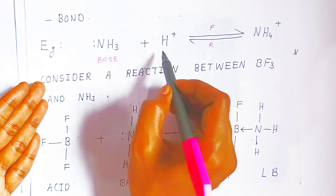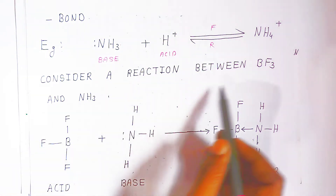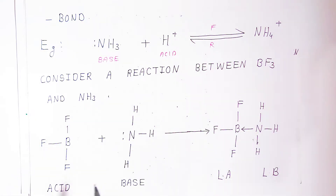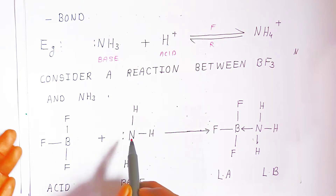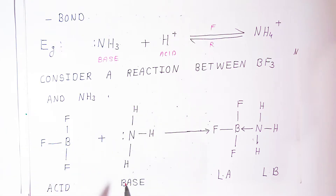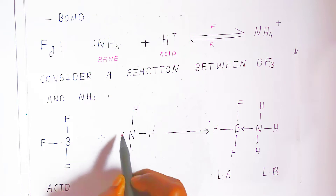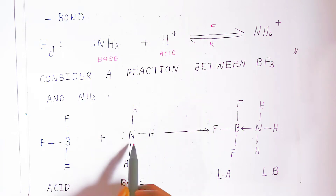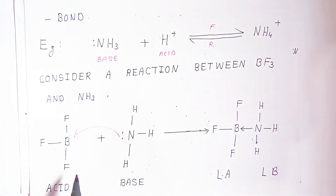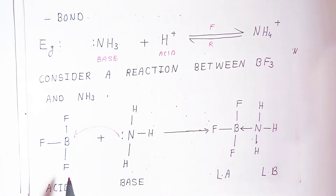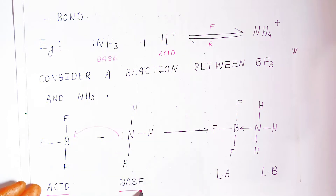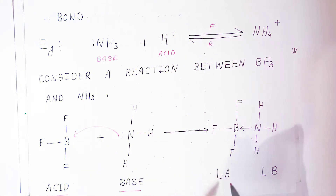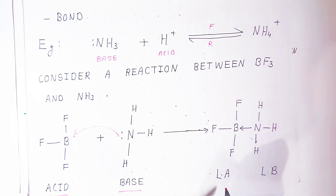Now consider the reaction between boron trifluoride and ammonia. Boron trifluoride accepts electrons from nitrogen — the nitrogen of ammonia donates its lone pair to boron. Since boron is an electron-deficient atom, the nitrogen of ammonia donates its lone pair to boron, forming a coordinate covalent bond. That is why boron trifluoride is called an acid and ammonia is called a base.